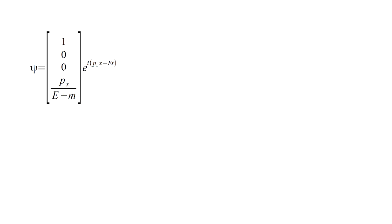Here's our result. When px is zero, this reduces to our previous solution for a positive energy spin-up electron at rest. But for non-zero momentum, the negative energy spin-down component is necessarily non-zero. Here's the solution that reduces to a positive energy spin-down electron at rest. For non-zero momentum, it must have a negative energy spin-up component.